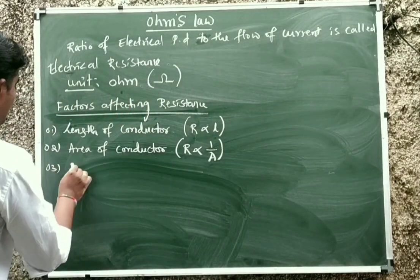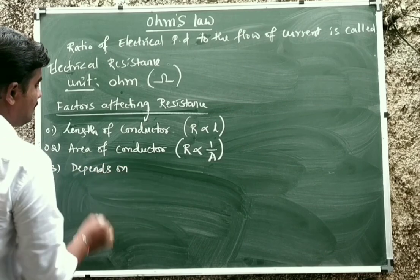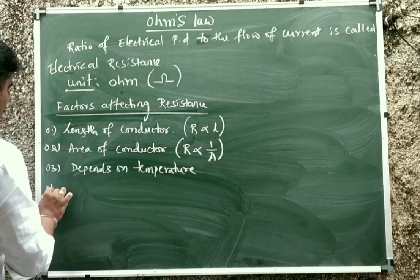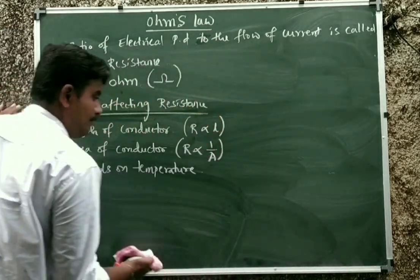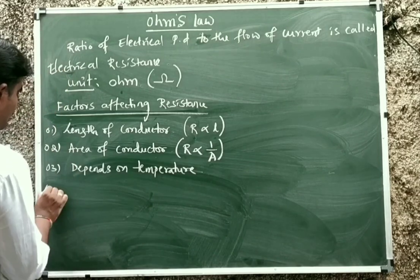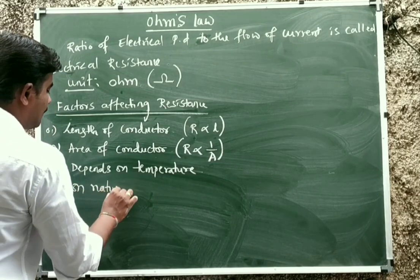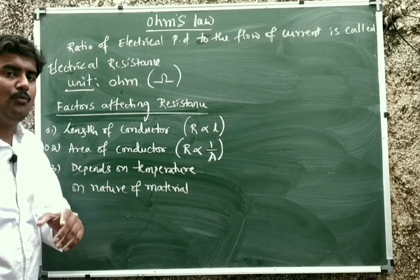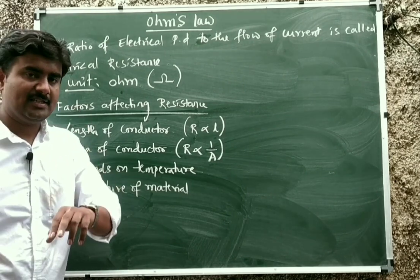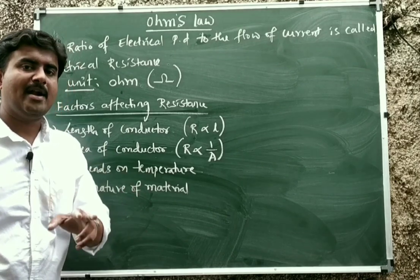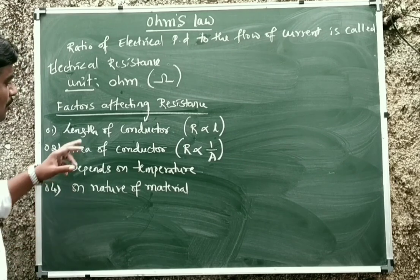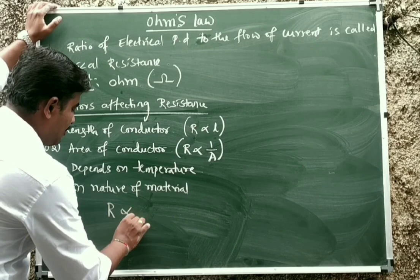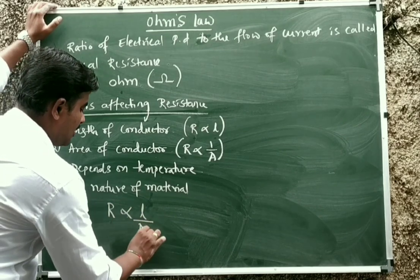The third factor is temperature, and the fourth factor is the nature of the material. As already mentioned, silver and aluminium are good conductors where resistance is less, and mica and wood are bad conductors where resistance is more. On these four factors, electrical resistance depends.